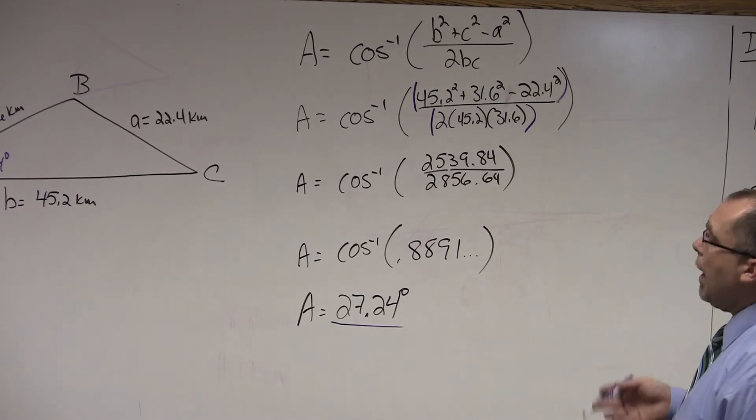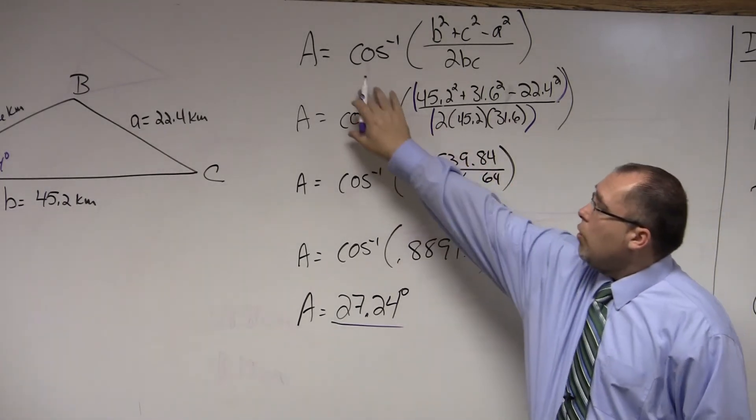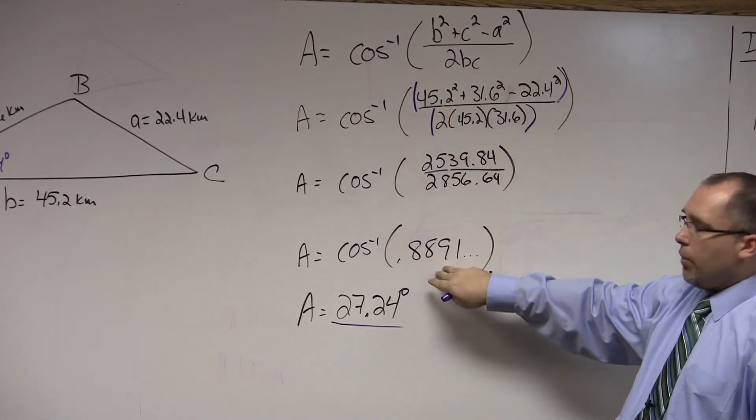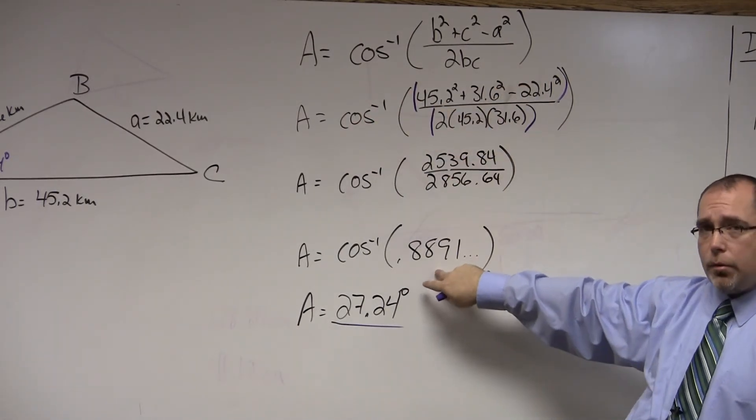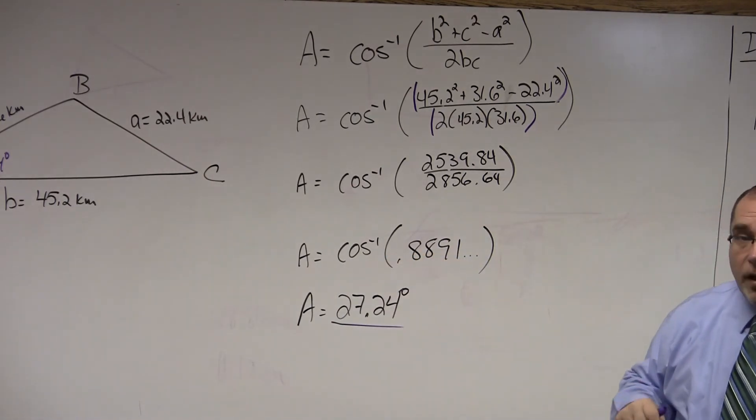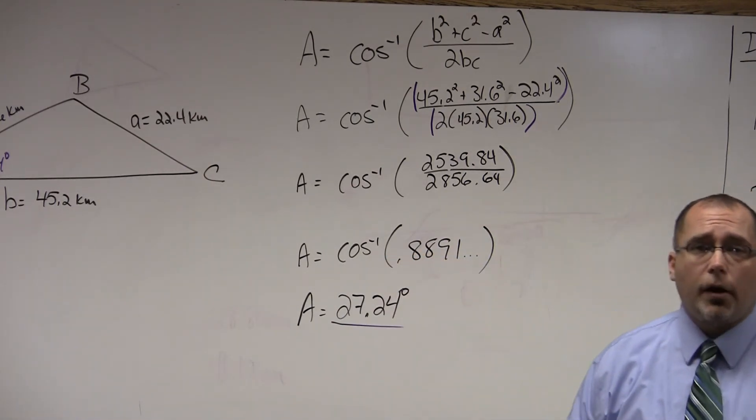But keep in mind, the most important thing, don't worry about the inverse cosine until the very last step. Do all the math inside the parentheses first. It should funnel down to a decimal. Inverse cosine that decimal. That'll give you the angle. And that's how you use the law of cosines to solve for an angle.